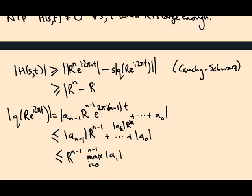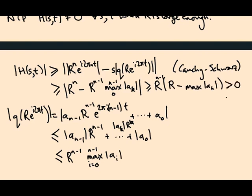So we can stick here r to the n minus one times this max of the a i's. OK, and that is bigger than or equal to, sorry, r to the n minus one times r minus the max of these a i's. So as long as this quantity is bigger than zero, I get positivity of the homotopy. Right, so if r is bigger than this maximum, if r is bigger than this thing, sufficiently large, then the homotopy is always through numbers with positive magnitude and it would never get to zero.